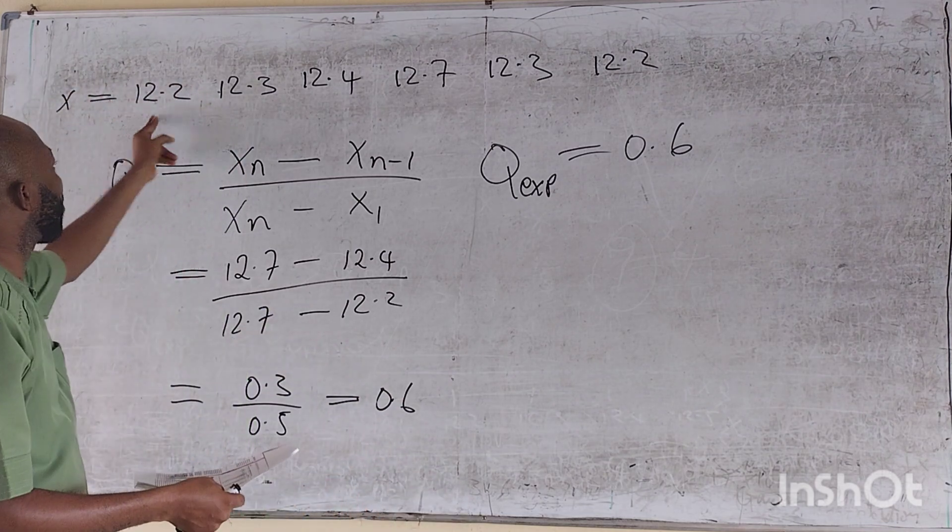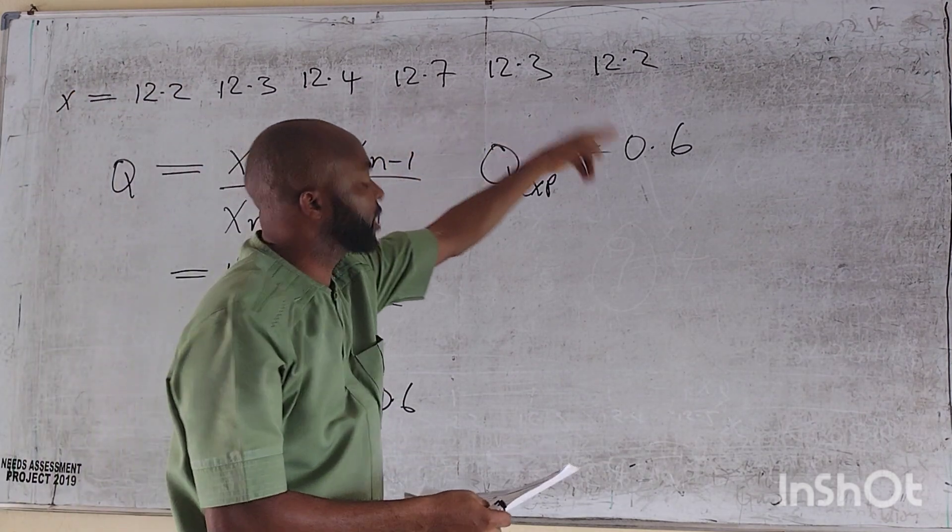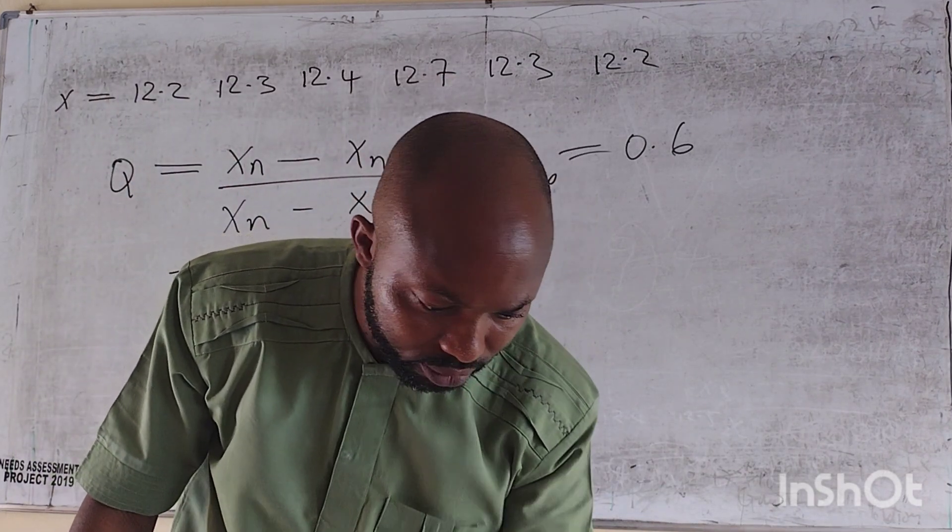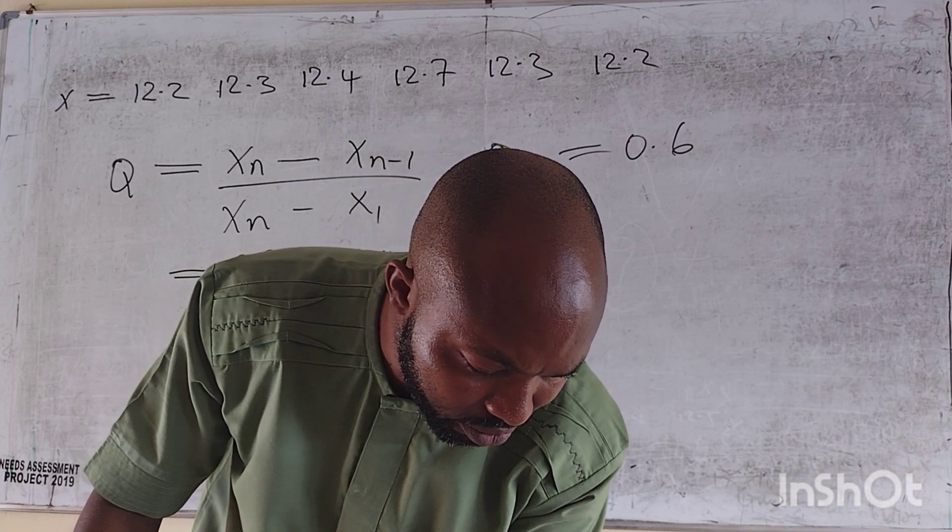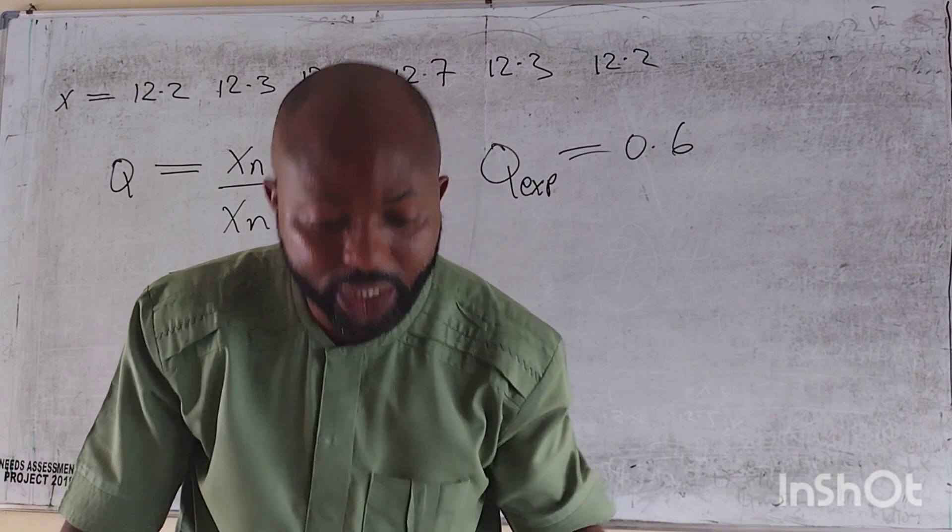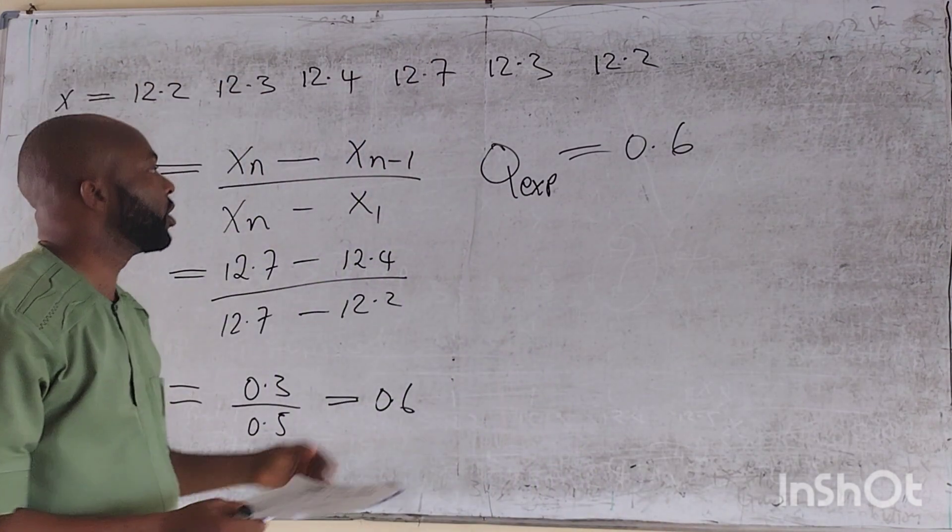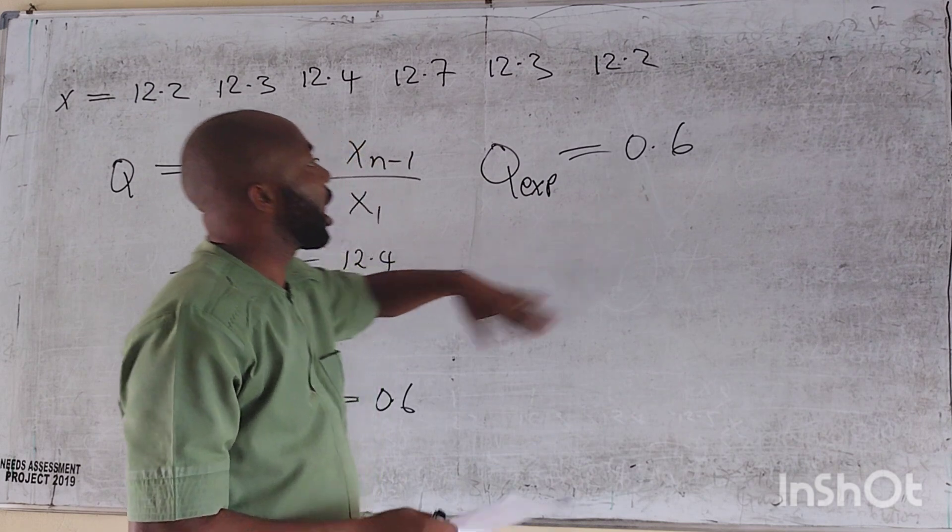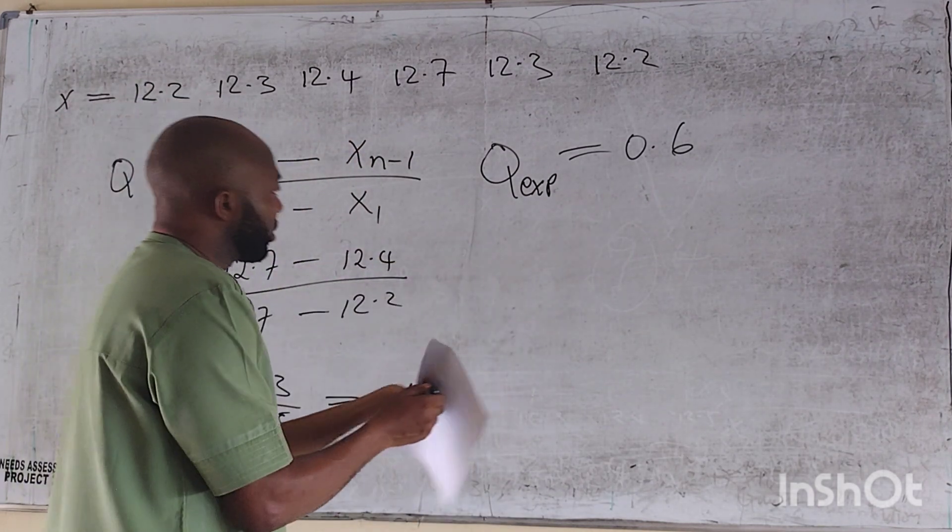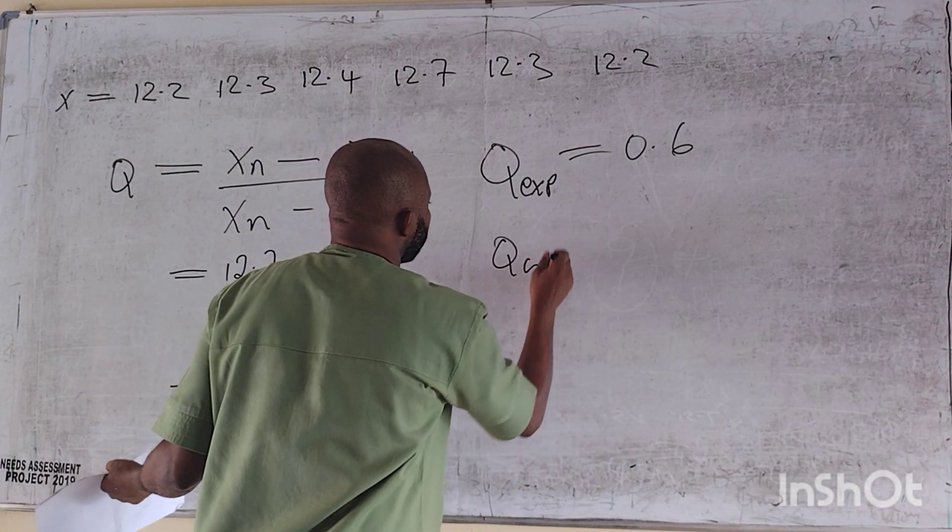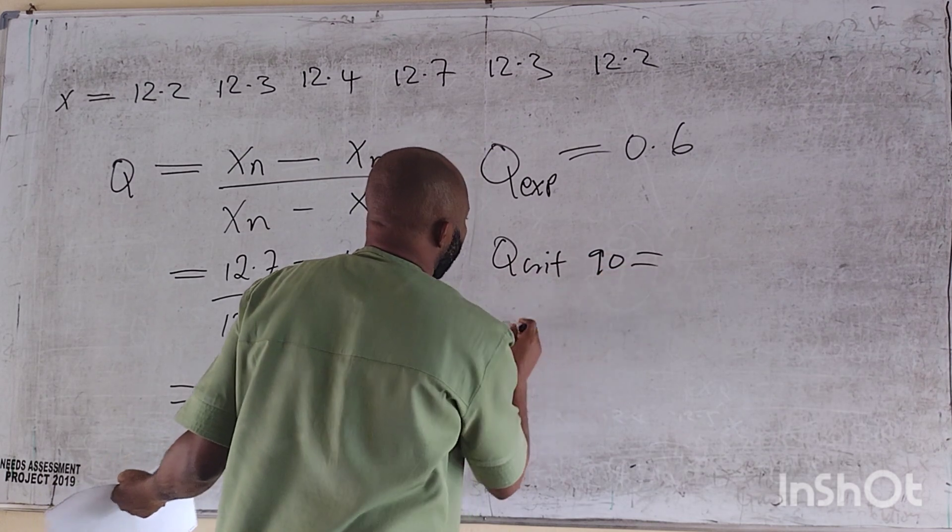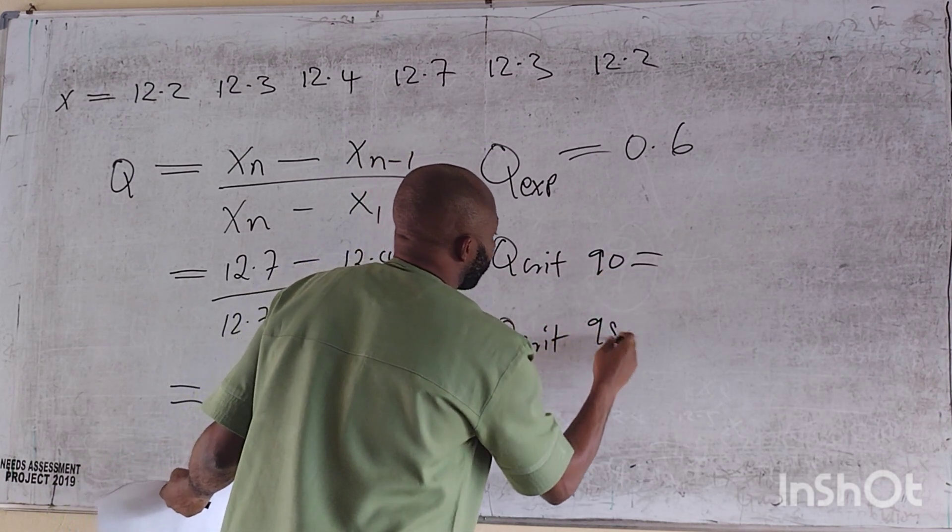But how many values do I have? I have 1, 2, 3, 4, 5, 6. The confidence level they give us, let me read it again, says if it was random, rejected at 90 or 95. So we use 90 or 95. Now my Q-experiment is 0.6. I want to look for the Q-critical at 90.